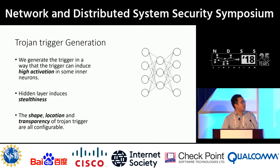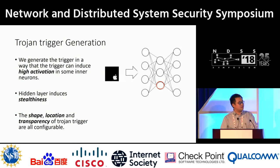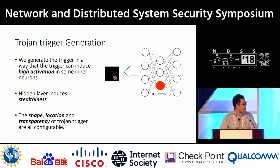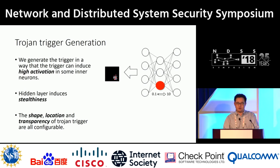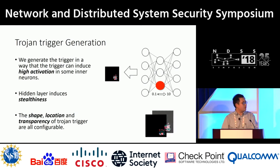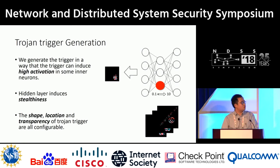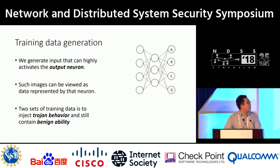Now I'll talk about backdoor trigger generation. We want the backdoor trigger to highly activate some inner neurons. First, we select a neuron from a hidden layer, then select the area where we want our trigger to be. Through gradient descent, we get a trigger that makes this neuron's value increase from 0.1 to 10. We select neurons from a hidden layer because hidden layers contain hidden features that are very hard for humans to interpret — giving us stealth for our backdoor trigger. The trigger's shape, location, and transparency are all configurable. These are all examples of backdoor triggers.